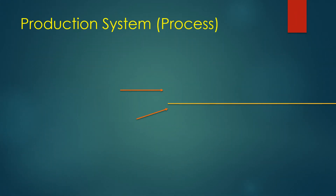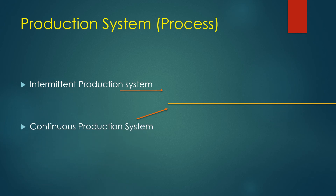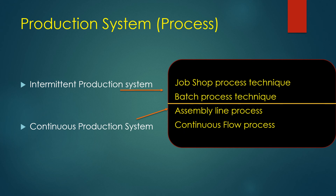There are two production system processes: first is the intermittent production system, and next is the continuous production system, under which job shop process, batch process technique, assembly line process, and continuous flow process are included.